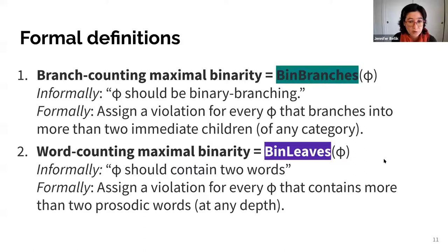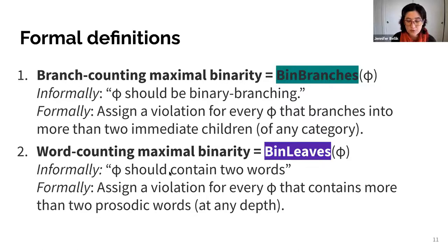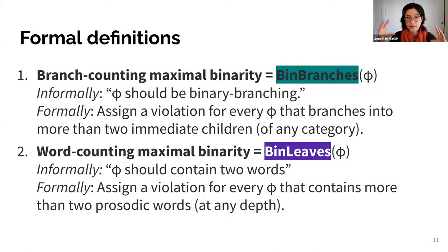Before we jump in, let me provide the formal definitions. Branch counting maximal binarity — bin-branches — informally states that a phi should be binary branching. Formally: assign a violation for each phi that branches into more than two immediate children of any category. Leaf counting maximal binarity — bin-leaves — informally says phi should contain two words. Formally: assign a violation for each phi that contains more than two prosodic words at any depth. Note that branch counting is evaluated locally, looking only at a node and its immediate children, whereas leaf counting requires a global search through the whole tree at every depth.